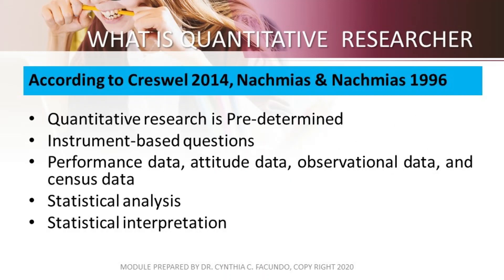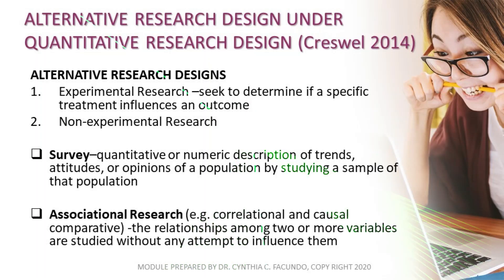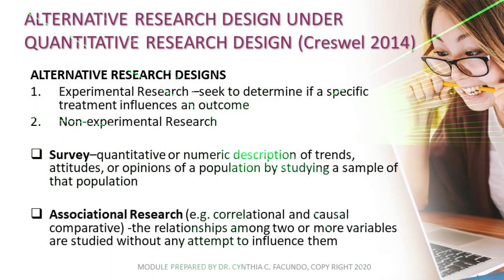According to Creswell 2014 and Nachmias and Nachmias 1996, quantitative research is predetermined. It involves instrument-based questions covering performance data, attitude data, observational data, and census data. You also need to use statistical analysis and statistical interpretation. Alternative research designs under quantitative research by Creswell 2014 include experimental research, which seeks to determine if a specific treatment influences an outcome.